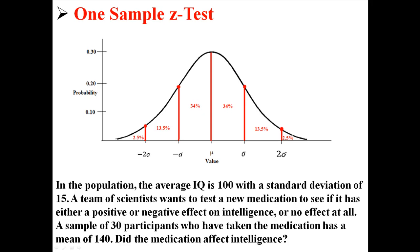Using this information, we can answer different kinds of questions. Here's one example: in the population, the average IQ is 100, with a standard deviation of 15. A team of scientists wants to test a new medication to see if it has either a positive or a negative effect on intelligence, or no effect at all. A sample of 30 participants who have taken the medication has a mean of 140. Did the medication have any effect on intelligence?